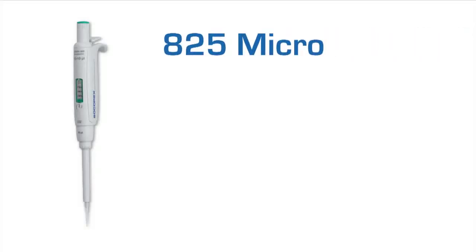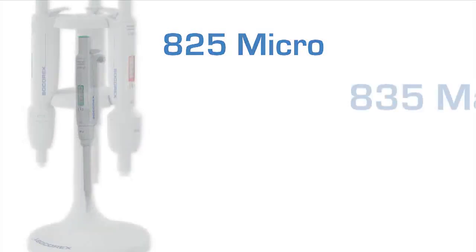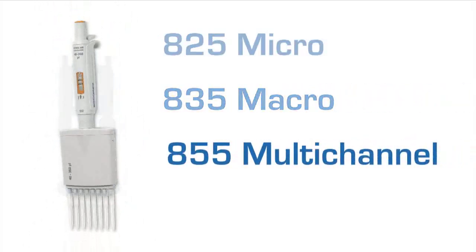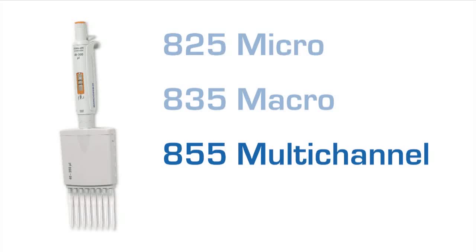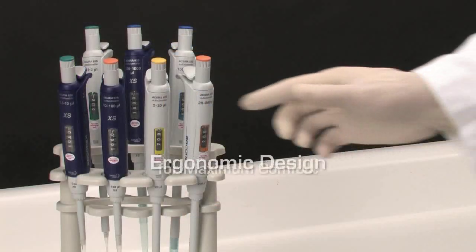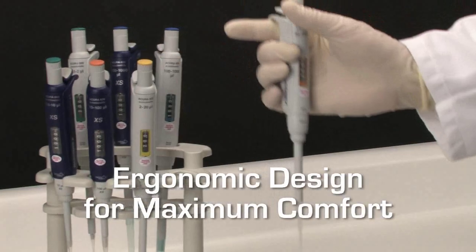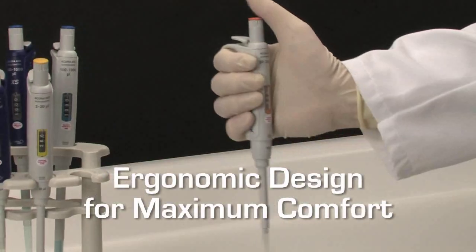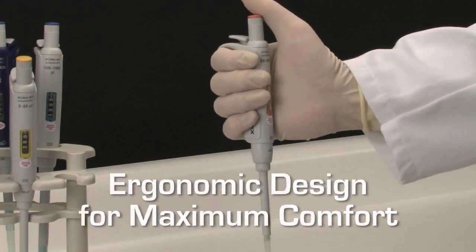Available in the well-known 825 Micro, 835 Macro and 855 multi-channel models and introducing the new 826 XS model for enhanced performance and research applications, Acura Manual Pipettes are designed and engineered to be comfortable and user-friendly as well as easy to maintain.